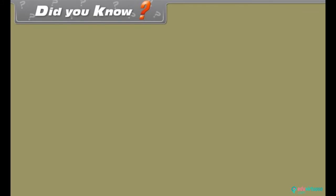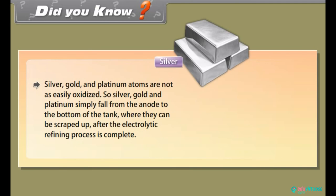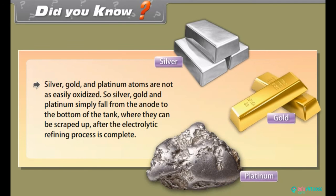Did you know? Silver, gold and platinum atoms are not easily oxidized. So silver, gold and platinum simply fall from the anode to the bottom of the tank where they can be scraped up after the electrolytic refining process is complete.